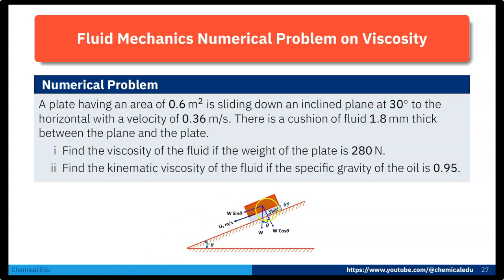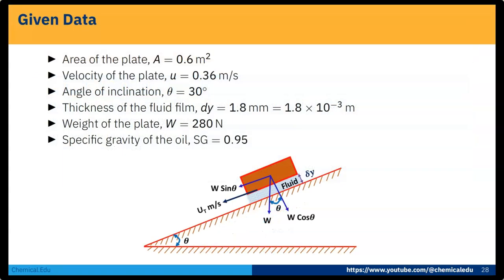Here you can see this is the plate that is sliding down an inclined plane which makes an angle of 30 degrees. The plate weight is 280 N and that fluid is packed in between the plate and the inclined plane. The fluid thickness is 1.8 mm. Now we have to calculate the viscosity and kinematic viscosity.